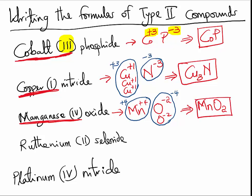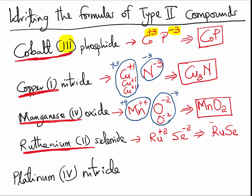Ruthenium(II) selenide — ruthenium is the first element, and according to this name it has a charge of plus 2. Selenium is the second element and selenium always has a charge of minus 2. Since the two charges already cancel out, Ruthenium(II) selenide would simply be RuSe.